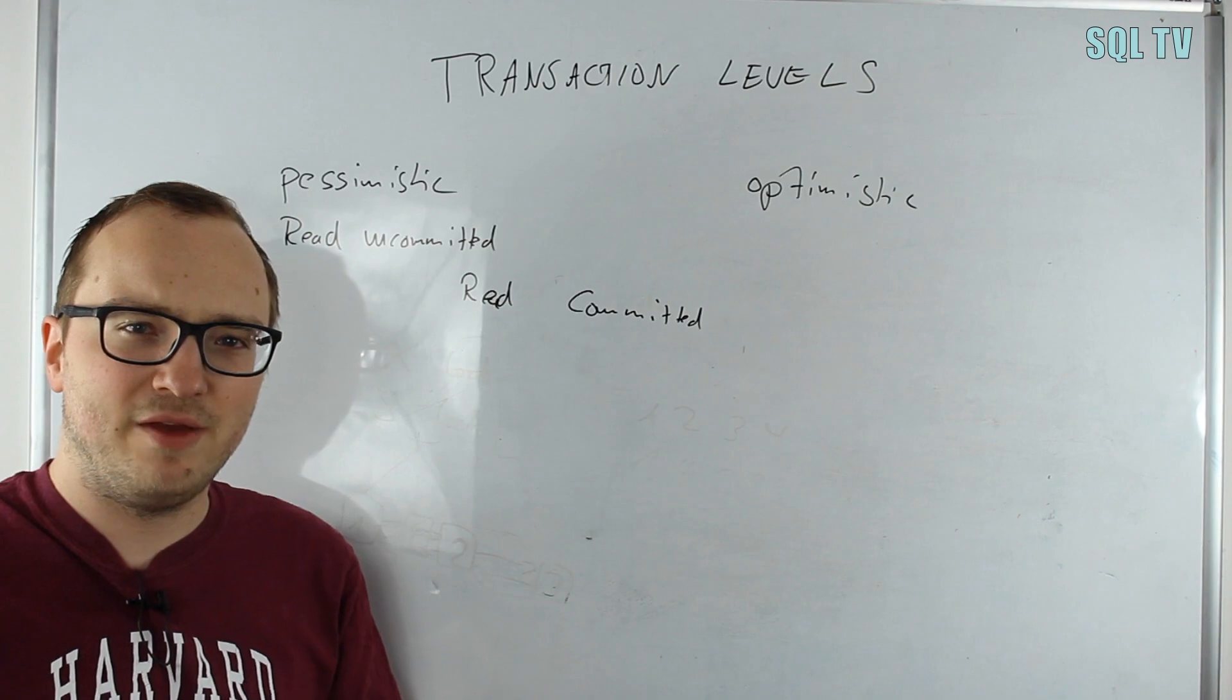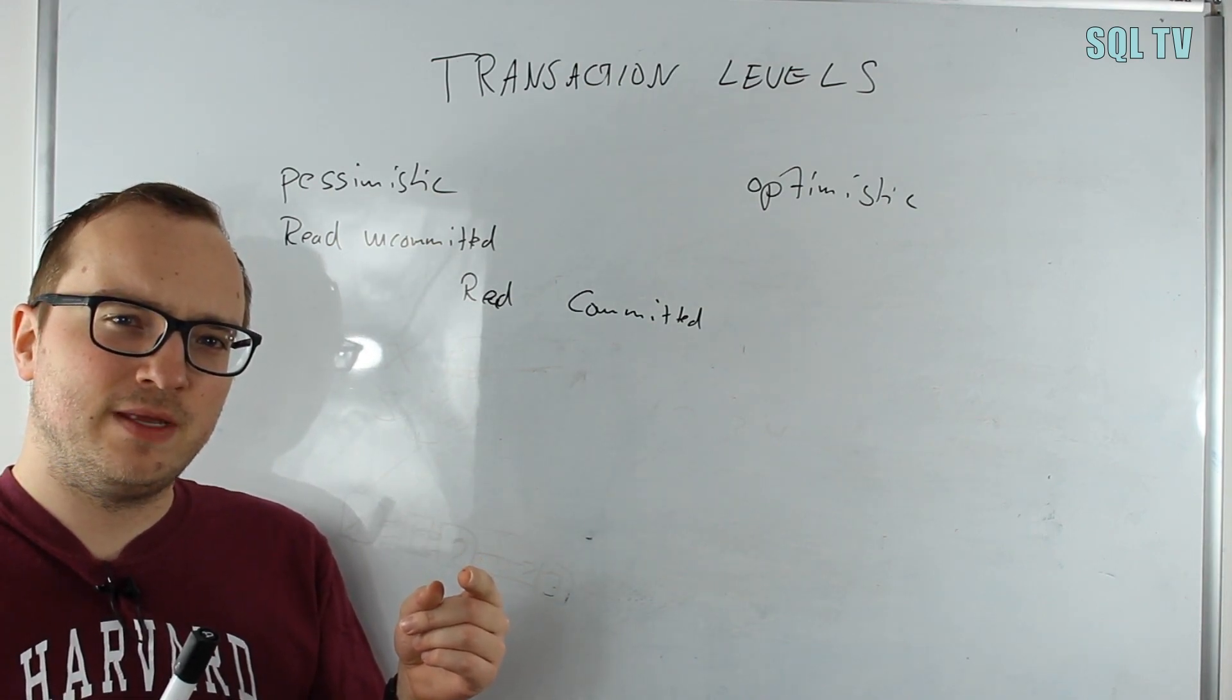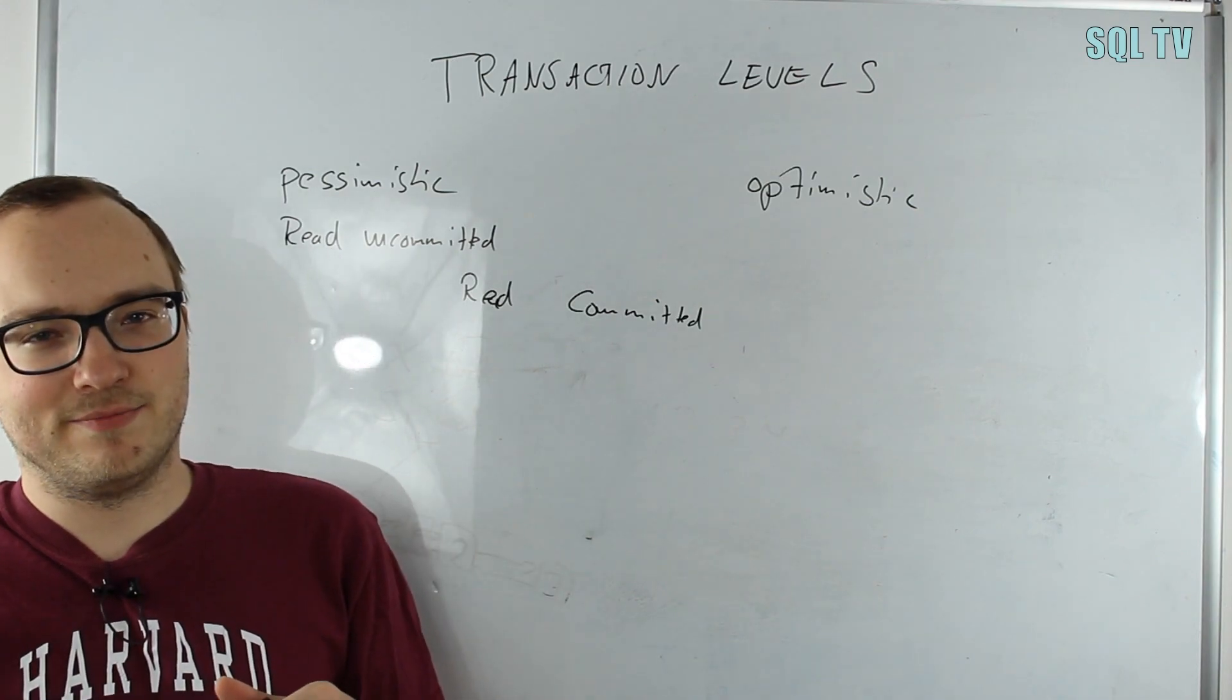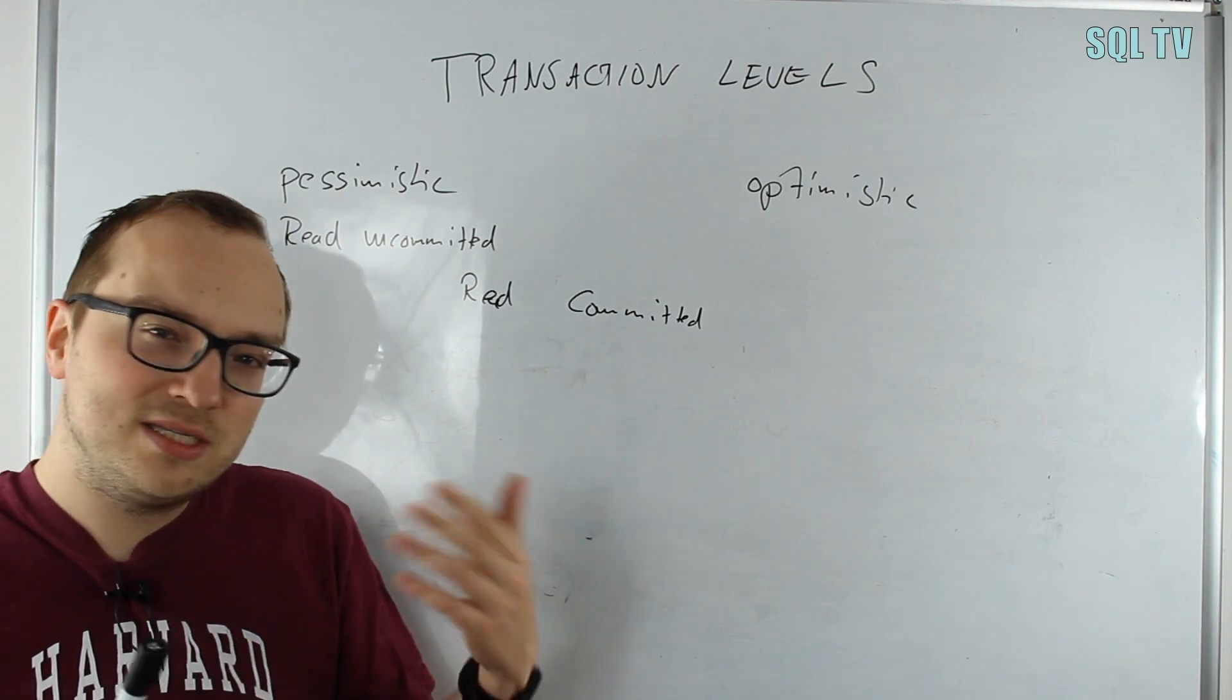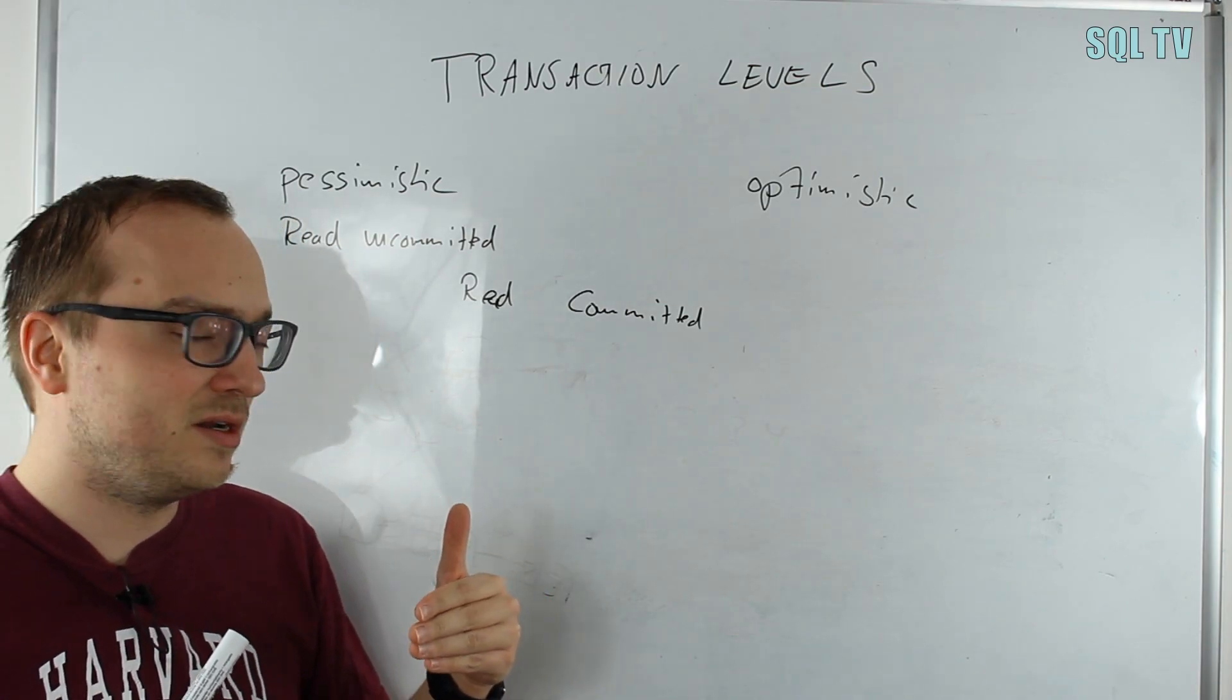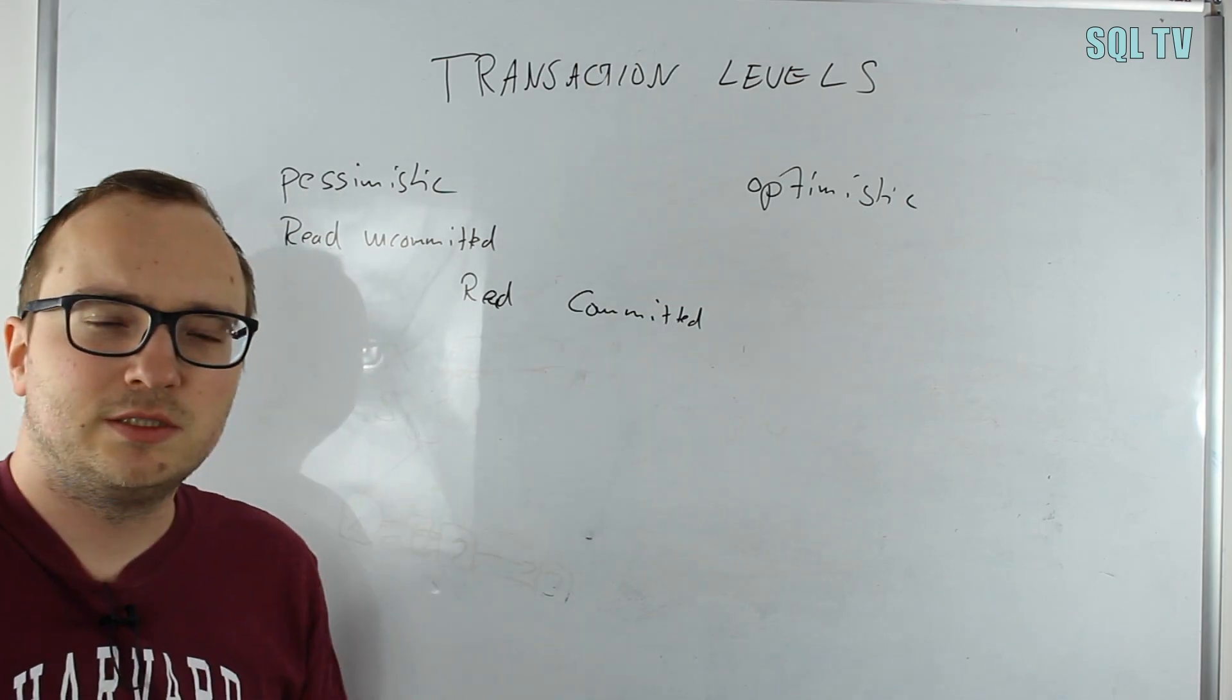If we look at the optimistic version of read committed, we have a row version store. If transaction one writes on a row or changes some values in a row, SQL Server copies the old version of that row into this version store and the new version currently under editing from transaction one is locked. If transaction two now wants to read data from that same row, it just takes the last version from the version store. We have no blocks in this case. We still cannot see the updated value since transaction one was not yet ready to commit it, but we don't just wait for the transaction to be committed—we can see an older version of it. This is a blocking-free version of read committed, with the downside that we have to store every old version of that row.